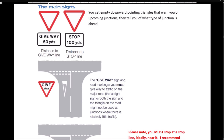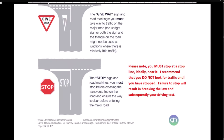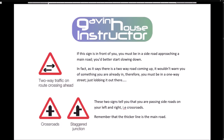The main signs: you get empty downward-pointing triangles that warn you of upcoming junctions and tell you what type is ahead. You MUST stop at a stop line — ideally near it. I recommend you do NOT look for traffic until you have stopped. Failure to stop will result in breaking the law and subsequently failing your driving test. If a two-way road sign is in front of you, you must be in a side road approaching a main road. Since it warns you of a two-way road coming up, it wouldn't warn you of something you're already in — therefore, you MUST be in a one-way street. Two signs tell you that you are passing side roads on your left and right, i.e. crossroads. Remember that the thicker line is the main road.